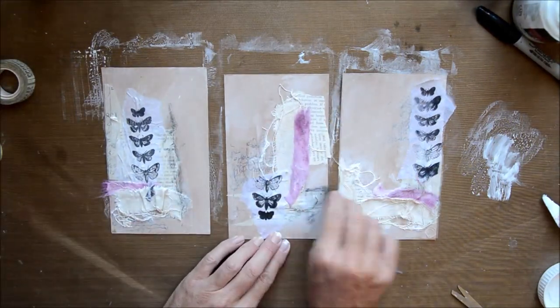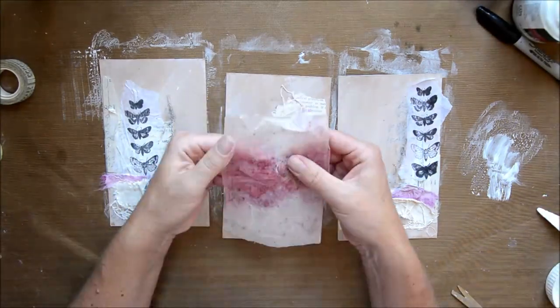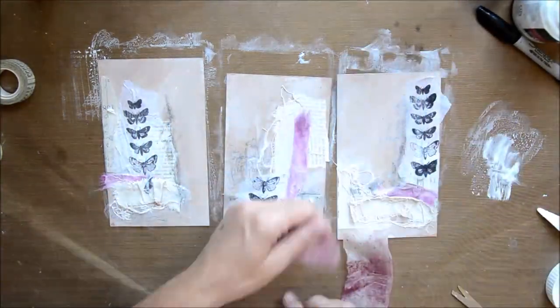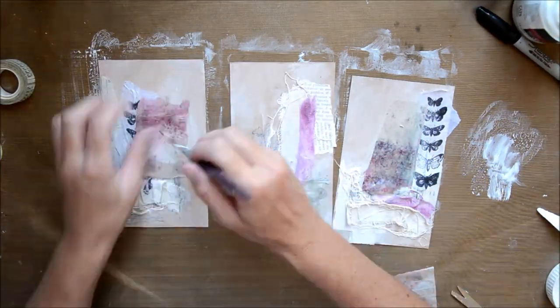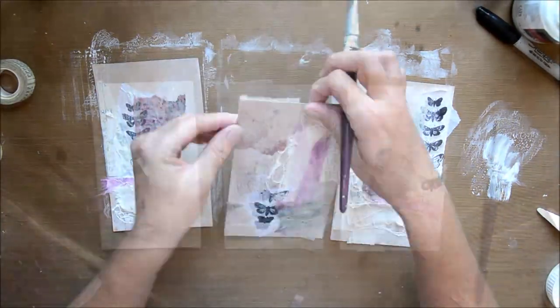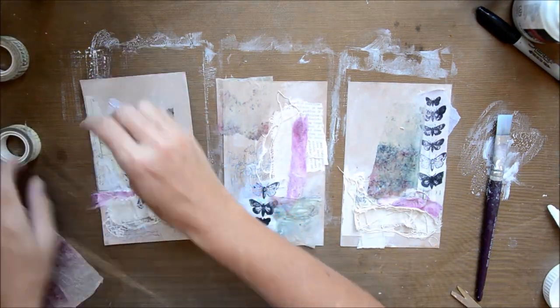Then I got some willow charcoal to add some lines, and then these are the tea bags. They look pinkish, but as soon as I've added the wet medium to them, they actually go a purple color. But we'll work with that.